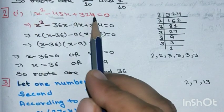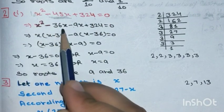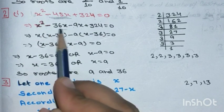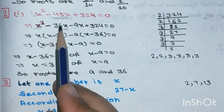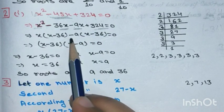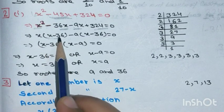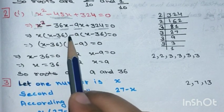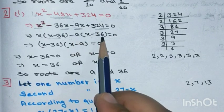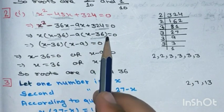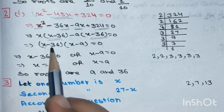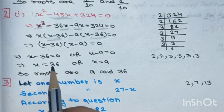Applying this to x² - 45x + 324 = 0: we split -45x into -36x and -9x. So: x² - 36x - 9x + 324 = 0. From the first two terms, take x common: x(x - 36). From the last two terms, take -9 common: -9(x - 36). Now x - 36 is common in both, so: (x - 36)(x - 9) = 0.